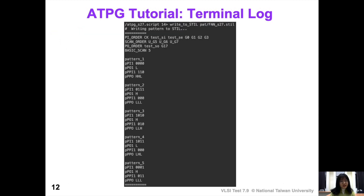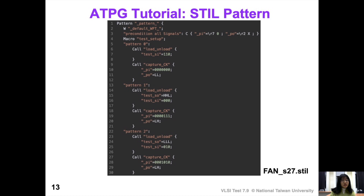As you can see, our ATPG tool not only outputs results to the specified file, it also prints the pattern information in the terminal log. So you don't need to open the output file to see what the generated patterns look like — you can simply see it in the terminal log directly. The next output is the STIL pattern file, which is used by TetraMax.